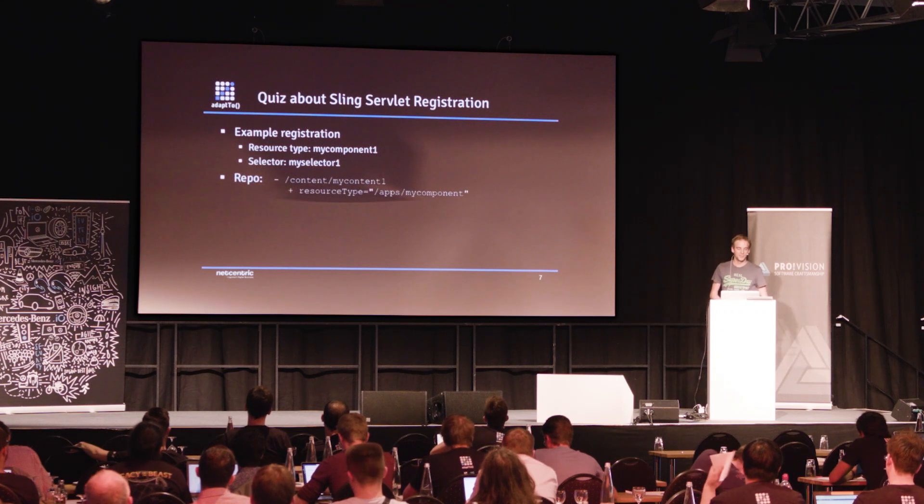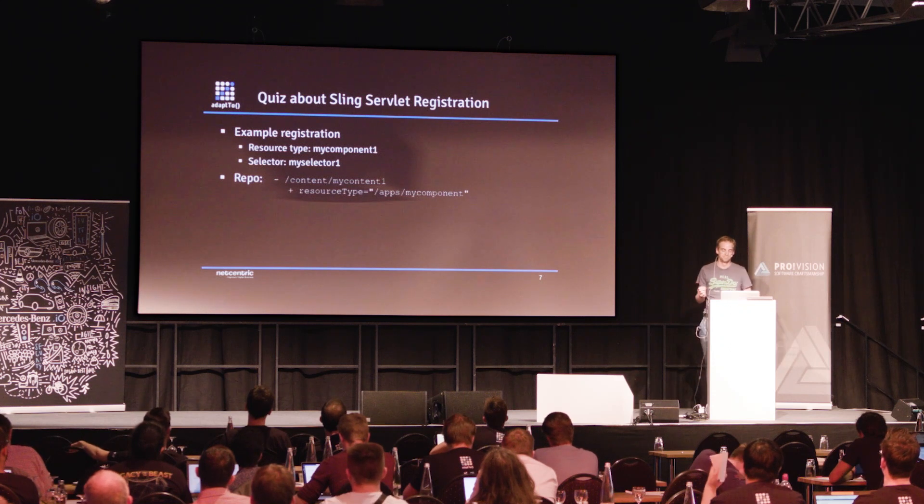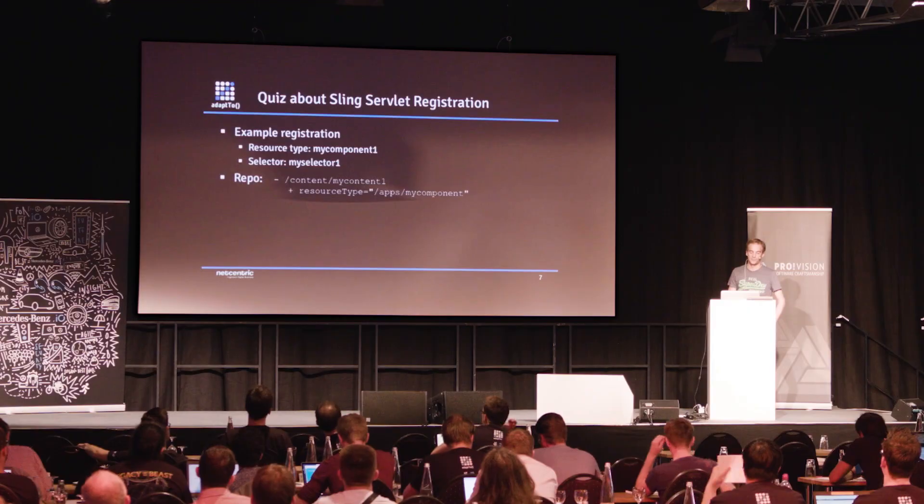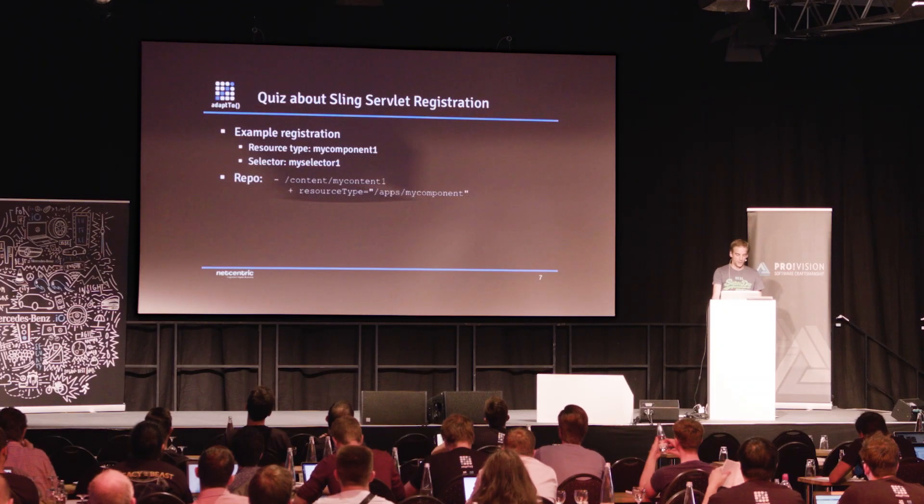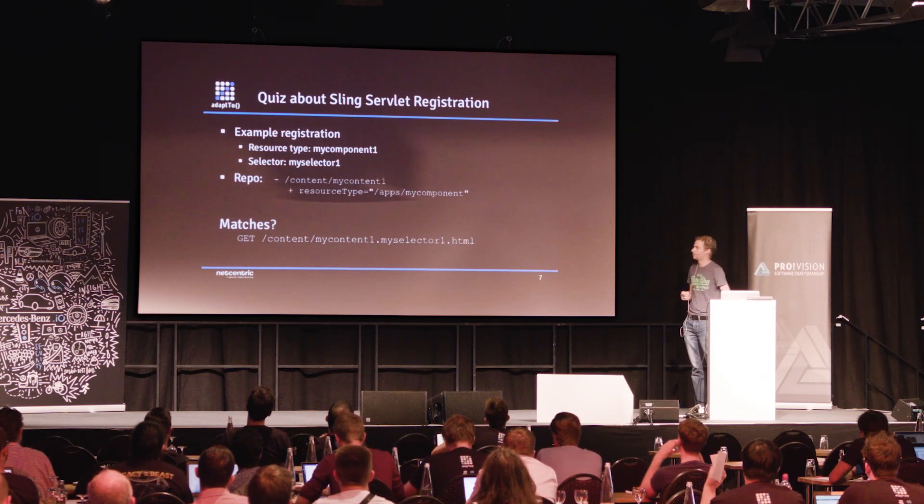Let's have a little fun with a quiz, because while I was implementing those annotations, I learned a lot about Sling servlets, registration, and some of the pitfalls. Consider you have a servlet registered to a resource type named MyComponent1 and the selector MySelector1. You have a repo with a content node, a resource below content called MyContent1, and the resource type is AppsMyComponent. Does this particular request URL match or not? It does not match, but the reason is probably not that well known.